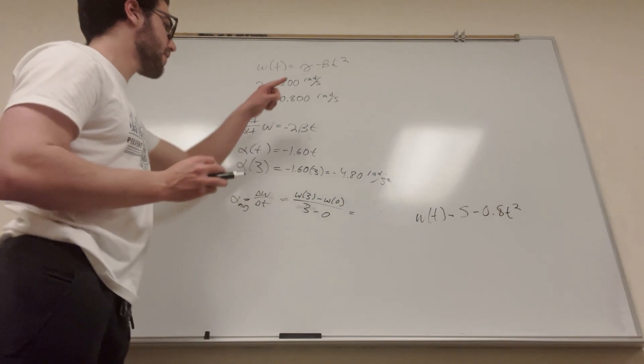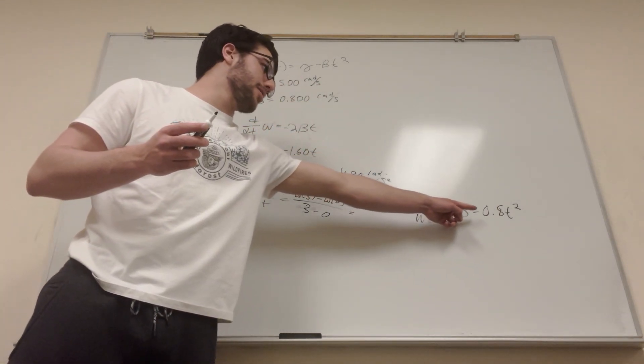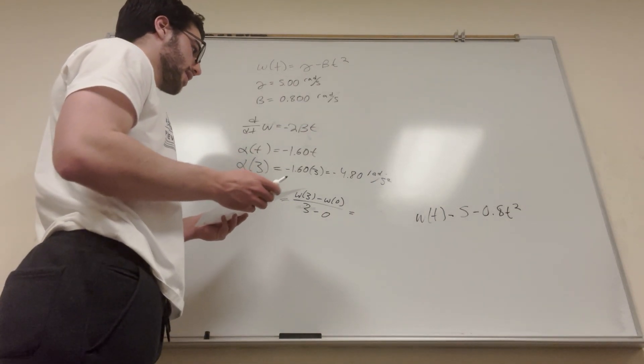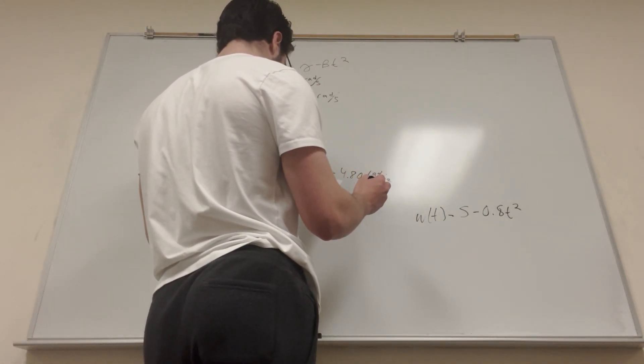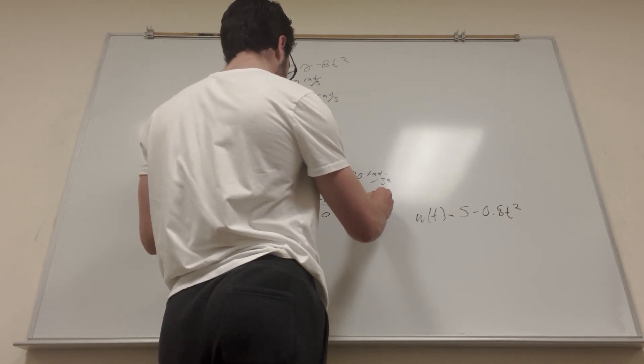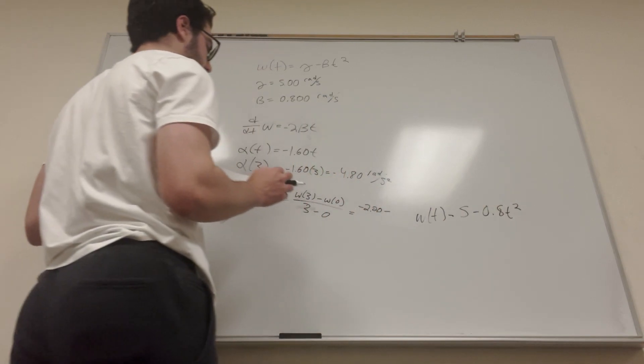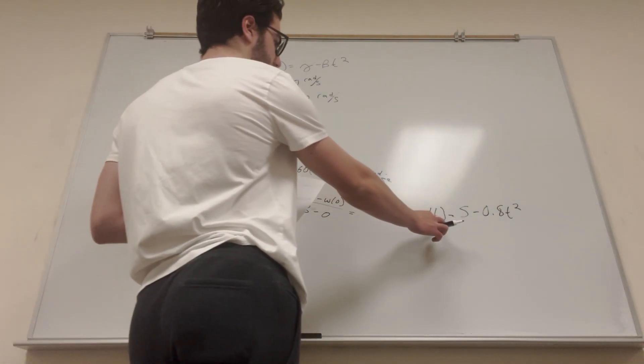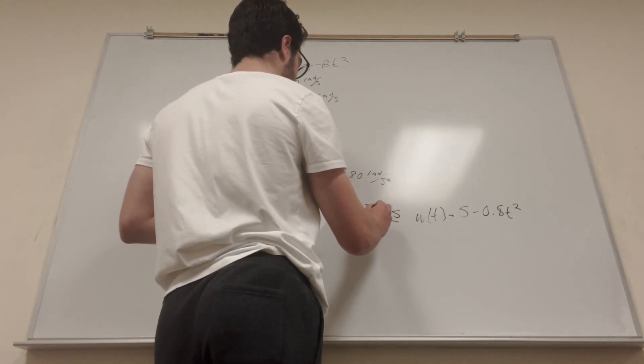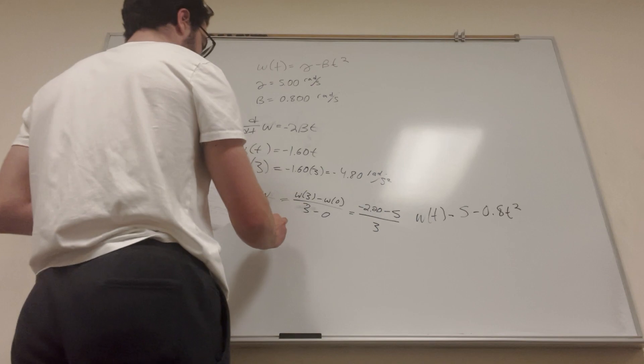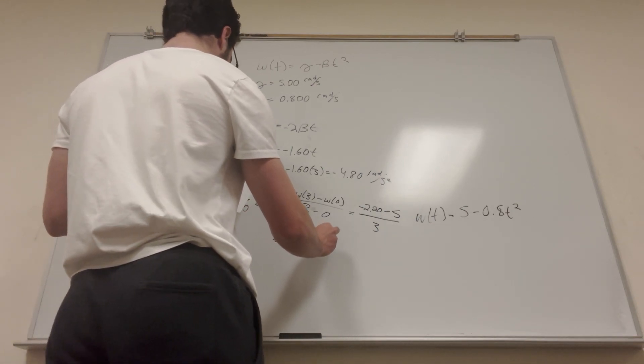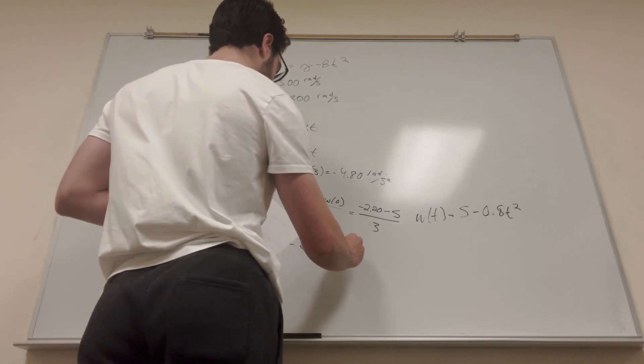Okay, so let's plug in 3 for this equation. So 5 minus 0.8 times 3 squared. That's going to be negative 2.20, and then at time equal to 0, you plug in 0 for this equation. It's going to be 5 minus 0, so it's just going to be minus 5. And then this is going to be over 3. This number calculates out to negative 2.40 radians per second squared.